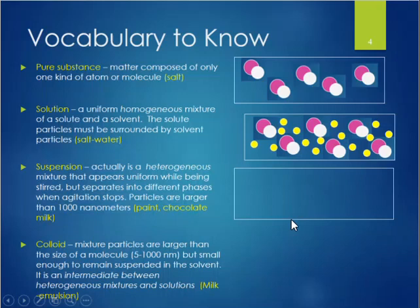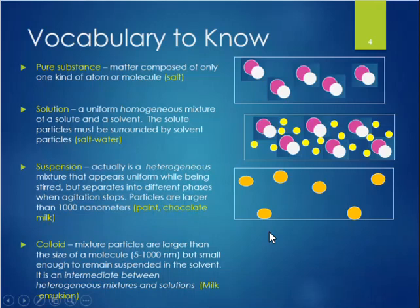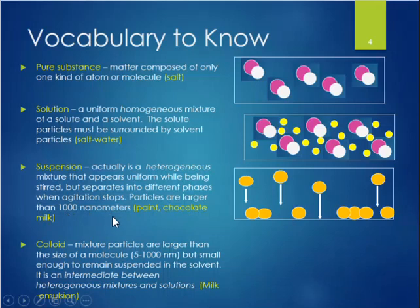A suspension is also a type of mixture, but it is not a solution. It's a heterogeneous mixture that initially appears uniform while being stirred or agitated. However, given time to settle, you'll notice that the particles in a suspension are quite large — usually visible to the eye — with a size of 1000 nanometers or greater. Over time, those larger, heavier particles will settle to the bottom and separate from the solvent molecules.